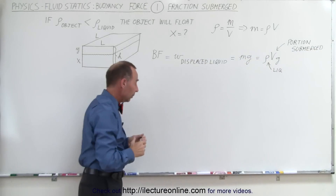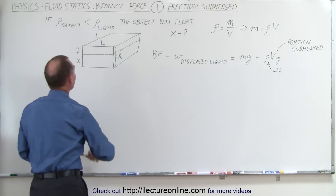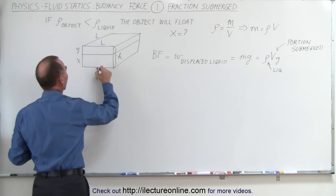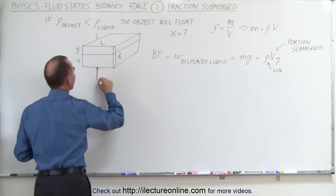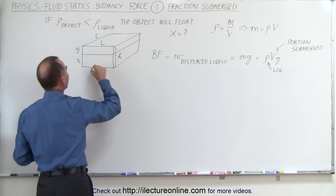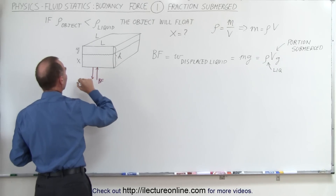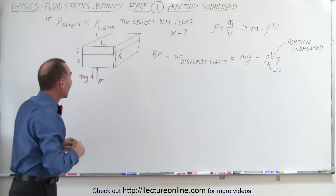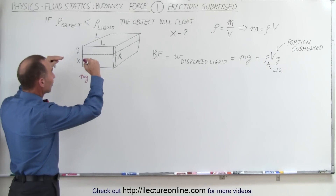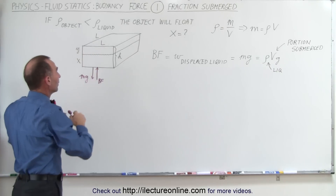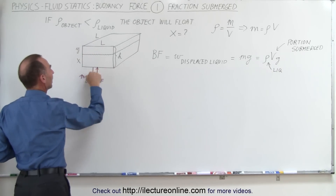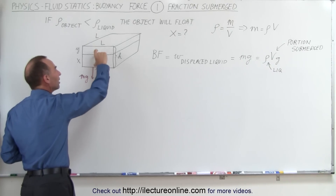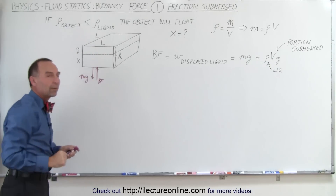What that means is that we're going to have a force pushing up against the object — this is the buoyancy force — and then we're going to have the weight of the object pushing down, pushing the object into the liquid. When the two equalize, that's when the object will stop going down. If the buoyancy is greater, the object will go up; if mg is greater, the object will go down, and eventually it will find its equilibrium point. At that point, the object will be floating.